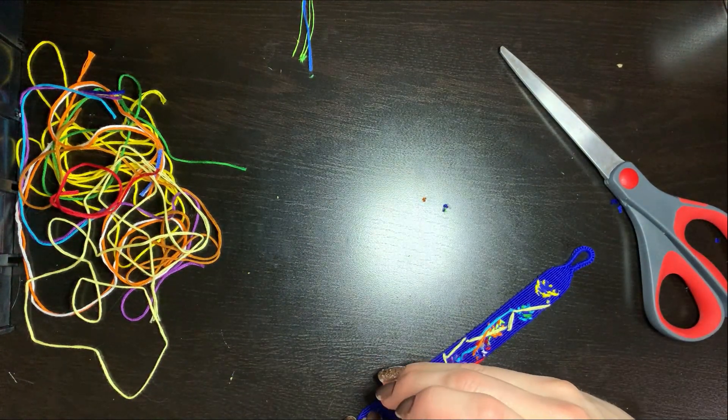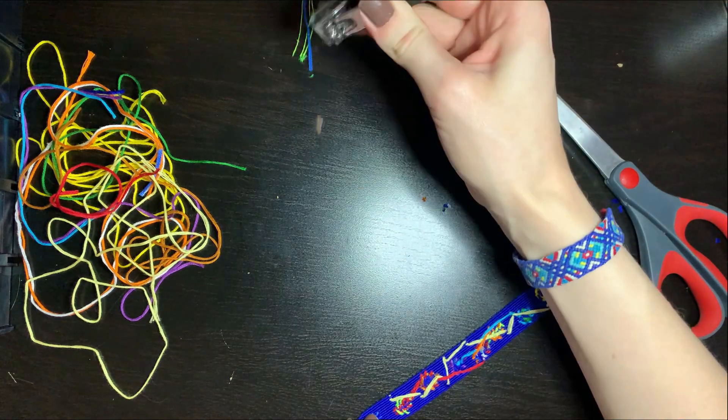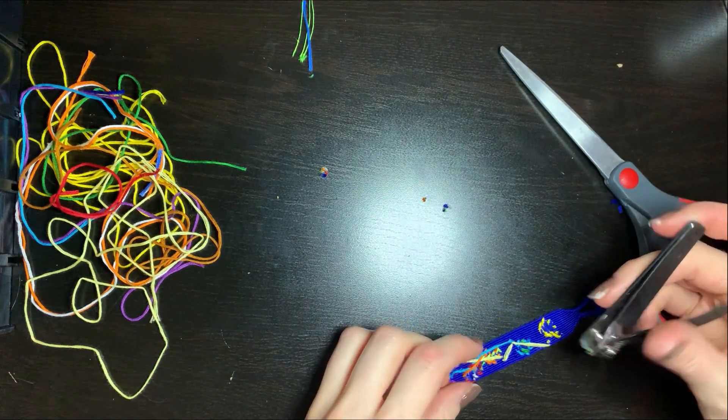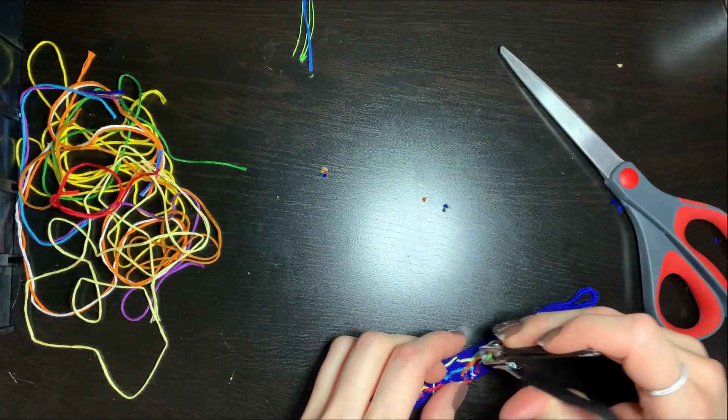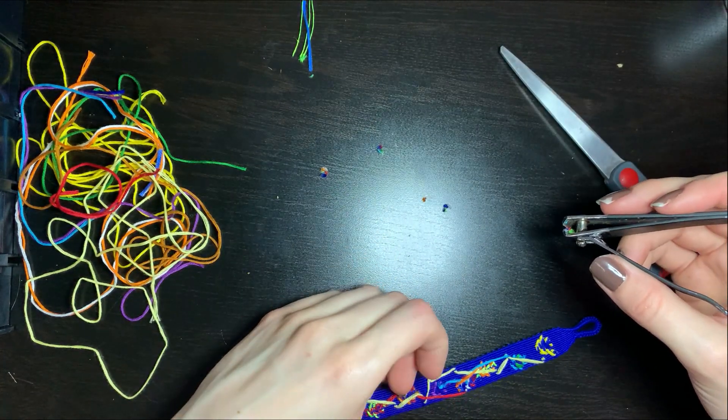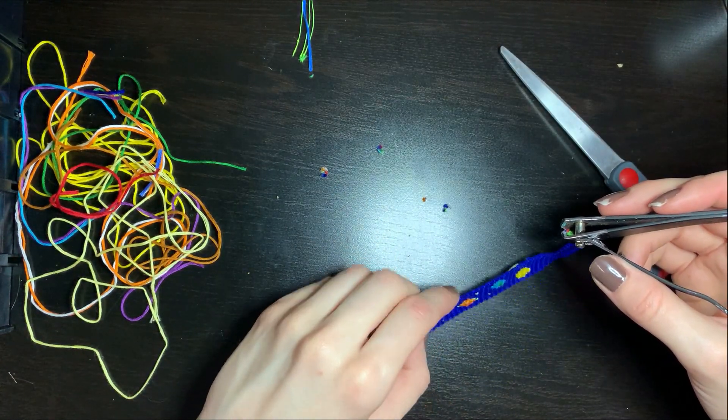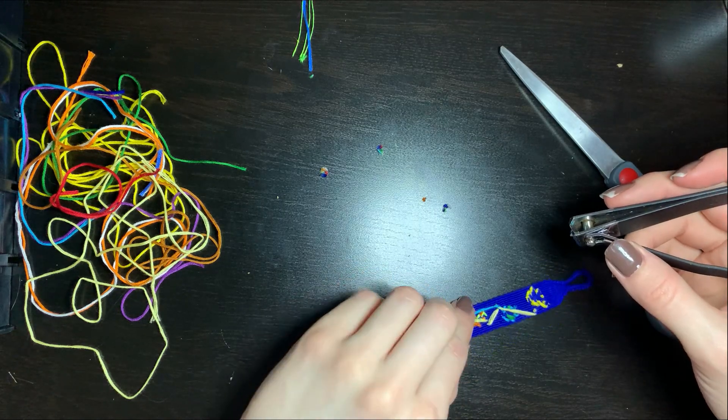I don't glue or anything on the back of my bracelets, so I kind of count on multiple knots of color keeping the strings in place. I get asked that a lot and that's what I do—I cut right flat to the back of the bracelet and I don't do any glue or nail polish or anything on it.